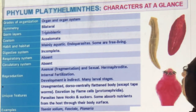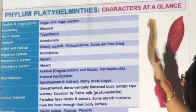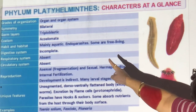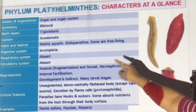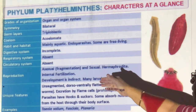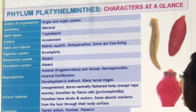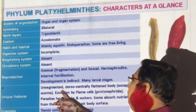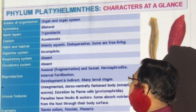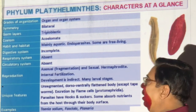Revision of Platyhelminthes: organ and organ system, bilateral symmetry, triploblastic (ectoderm, mesoderm, endoderm), no coelom (acoelomate), mostly found in water but endoparasites also exist, and some are free-living. Digestive system incomplete — only mouth present. No respiratory or circulatory system. Reproduction: asexual by fragmentation or sexual by internal fertilization; hermaphrodite with many larval stages. Unique: flat body, no external segments, excretion by flame cells, parasites have suckers. Examples: Taenia, Fasciola, Planaria.